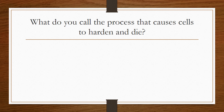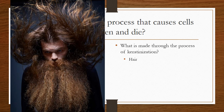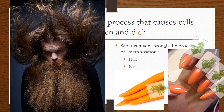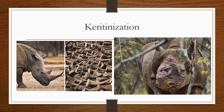We're going to move on to an entirely new subject. What do you call the process that causes skin cells to harden and die? It's called keratinization. What is made on your body through the process of keratinization? One thing is your hair, and another thing is your nails. A memory clue to help you remember keratinization is that carrots are hard vegetables — and these carrots look a lot like this lady's nails. Rhino horns are also made of keratin, and poachers will maim or kill an animal for its horns. It's very sad.